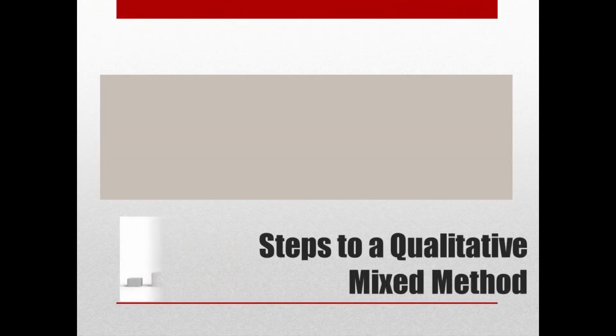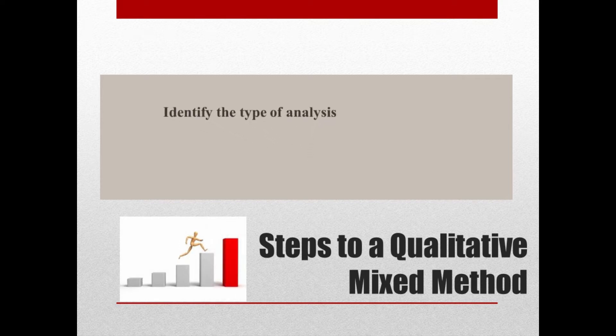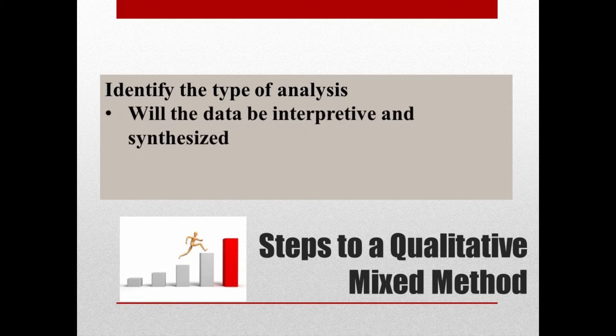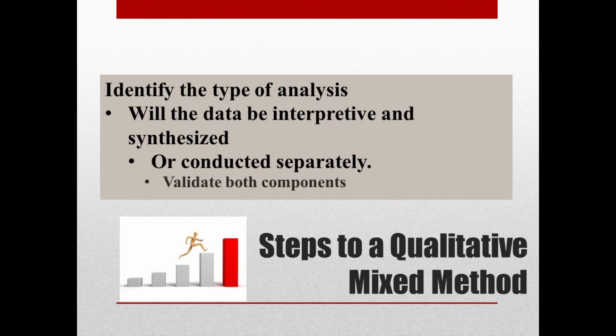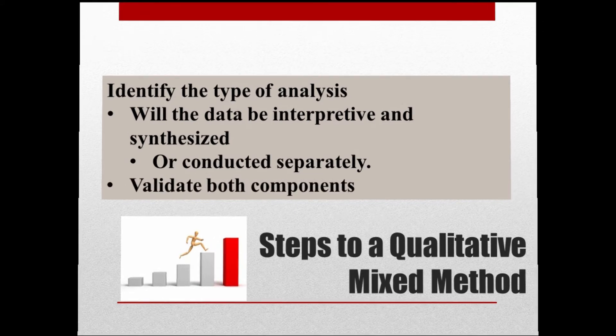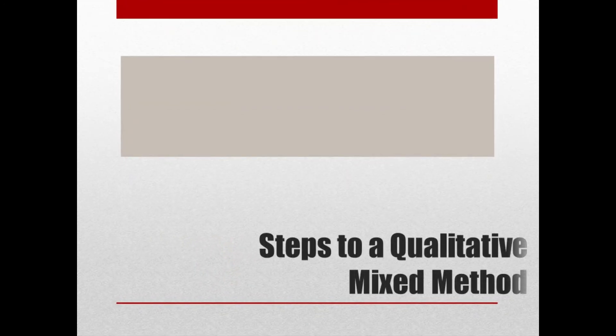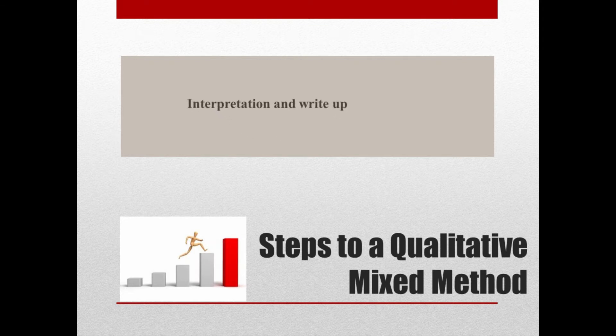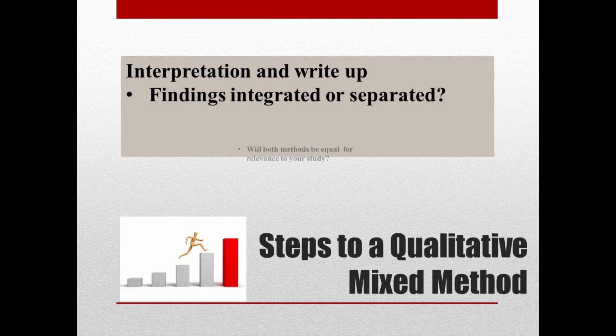The fifth step is to identify the type of analysis to be conducted. Will the analysis be interpretive and synthesized or conducted separately? Be sure to validate both qualitative and quantitative components. The sixth and final step is interpretation and write-up. Will your findings be integrated or separated? How will you present both methods equally? Or is that even relevant to your study?